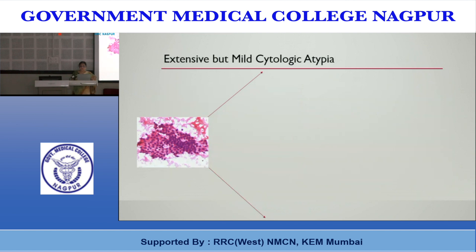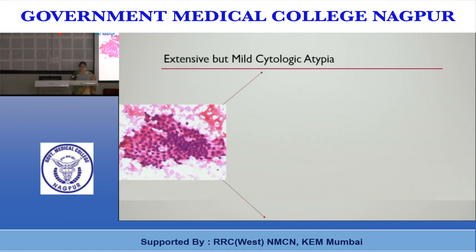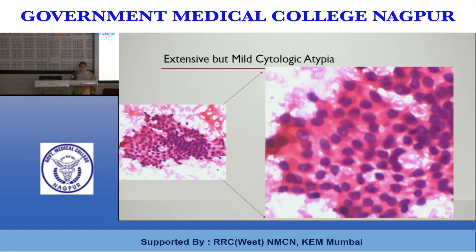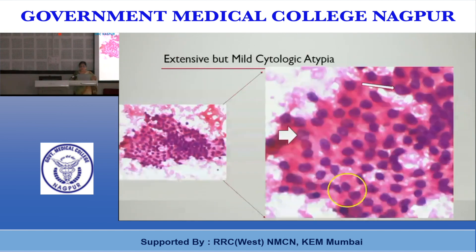A sheet of cells in a honeycomb pattern with mild nuclear atypia in most cells comes under extensive but mild cytologic atypia. There can be pale-looking nuclei with doubtful pseudoinclusions and grooves that are not convincing — this lesion merits inclusion in the AUS category.